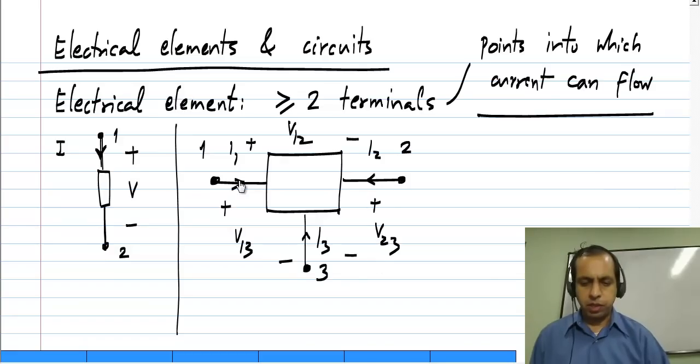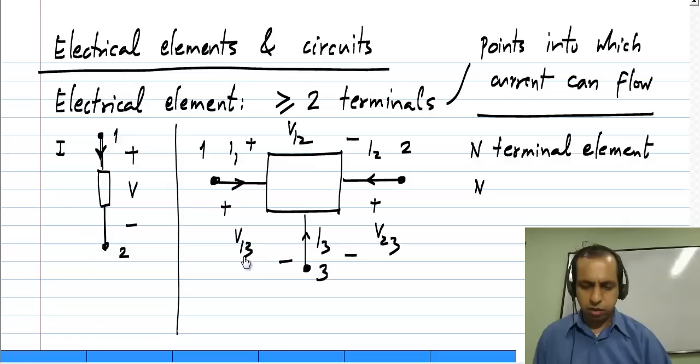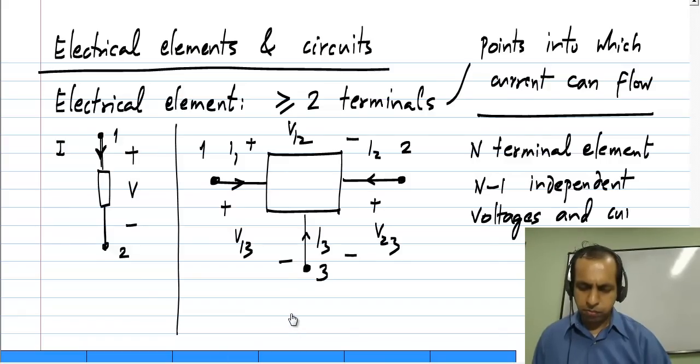Soon it will become clear that if we have an n terminal element, there are n minus 1 independent voltages and currents.